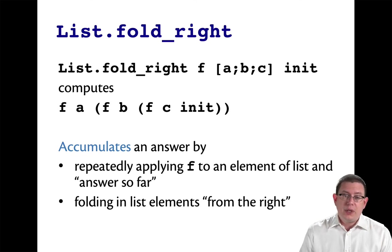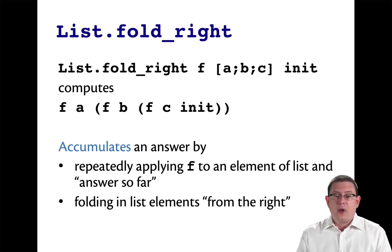Fold right is accumulating an answer by repeatedly applying a function f to an element of a list and what it has as the answer so far, what's been accumulated. And it does this by folding in from the right.